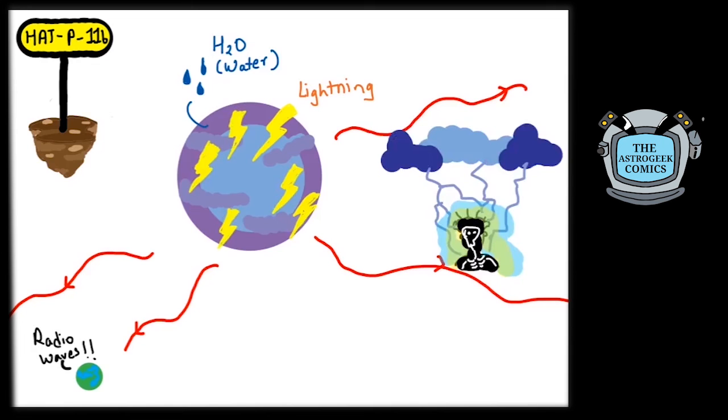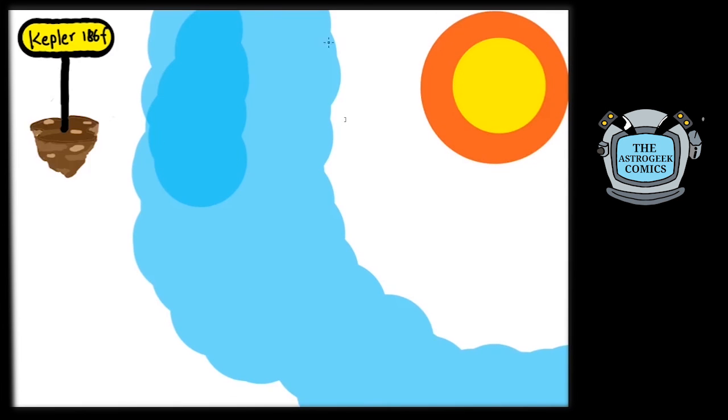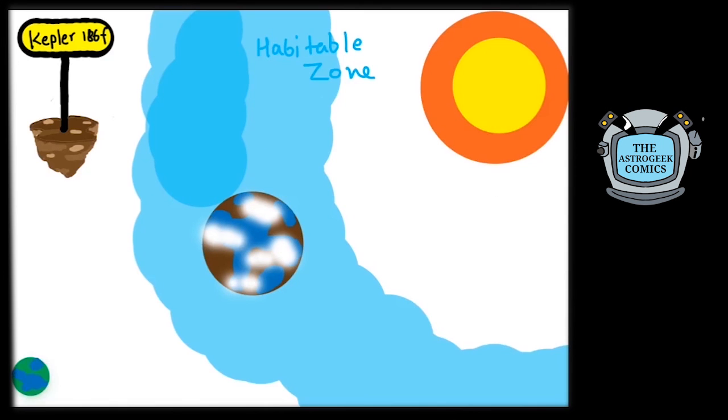That is electrifying. The last planet I will mention to give you some hope is Kepler-186f, a planet in the habitable zone and measures almost the same as Earth. It might even have water. The catch? It is 500 light-years away.